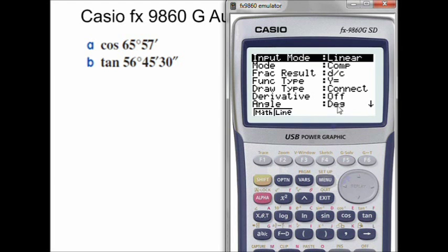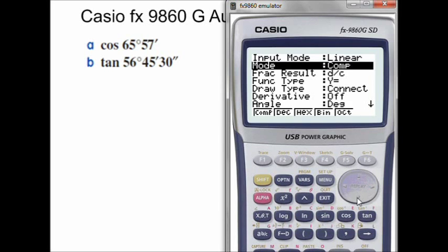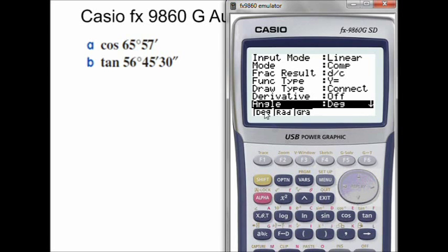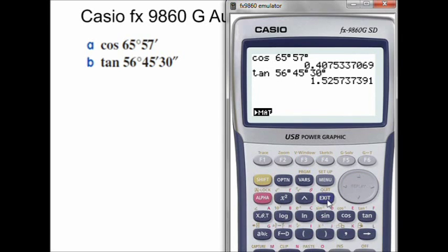One important thing to remember though is to make sure you're working in degrees. On the Casio, you need to go to shift menu, and you're either in degrees or radians—you want degrees.